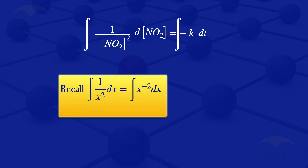Using laws of indices, 1 over x squared is just x to the power minus 2. The integral of x to the power minus 2 with respect to x gives us minus x to the power minus 1. So for the integral on the left, with the concentration of nitrogen dioxide in place of x, integrating gives minus the concentration of nitrogen dioxide to the power minus 1.